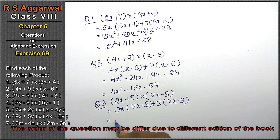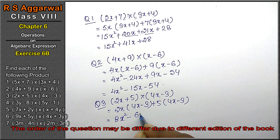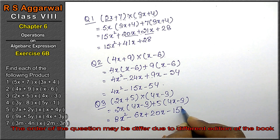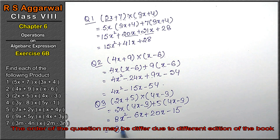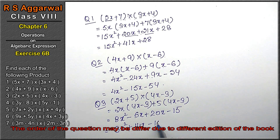2 times 4 is 8, both plus sign, x times x is x squared. Plus minus gives minus: 2 times 3 is 6x. Plus plus: 4 times 5 is 20x. Plus minus: 5 times 3 is 15. So we get 8x squared. This minus and this plus have opposite signs, so we subtract; the bigger sign wins: 14x minus 15 is the answer.